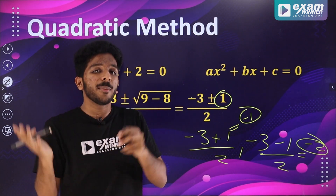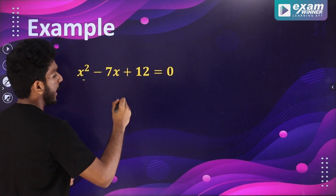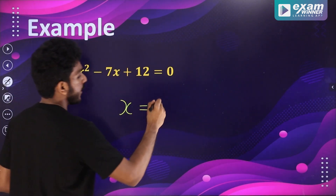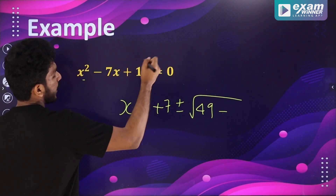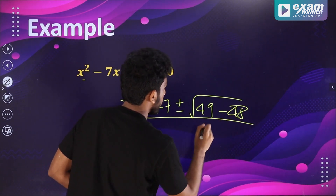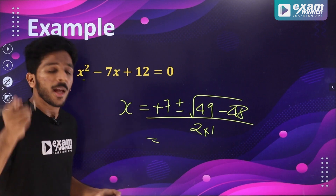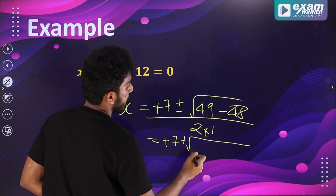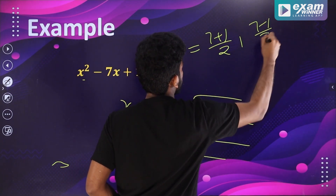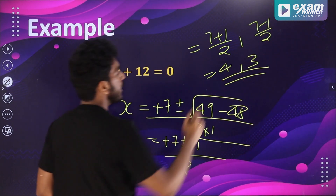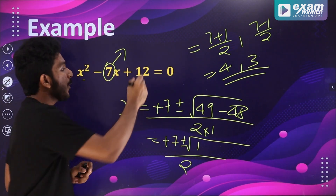Another example: we apply the quadratic formula. x equals 7 plus or minus root of 49 minus 48 divided by 2 — that is 7 plus or minus root 1 divided by 2. So 7 plus 1 divided by 2 is 8 by 2 equals 4, and 7 minus 1 divided by 2 is 6 by 2 equals 3. The answer is x equals 4 and x equals 3. Both methods give the same result.